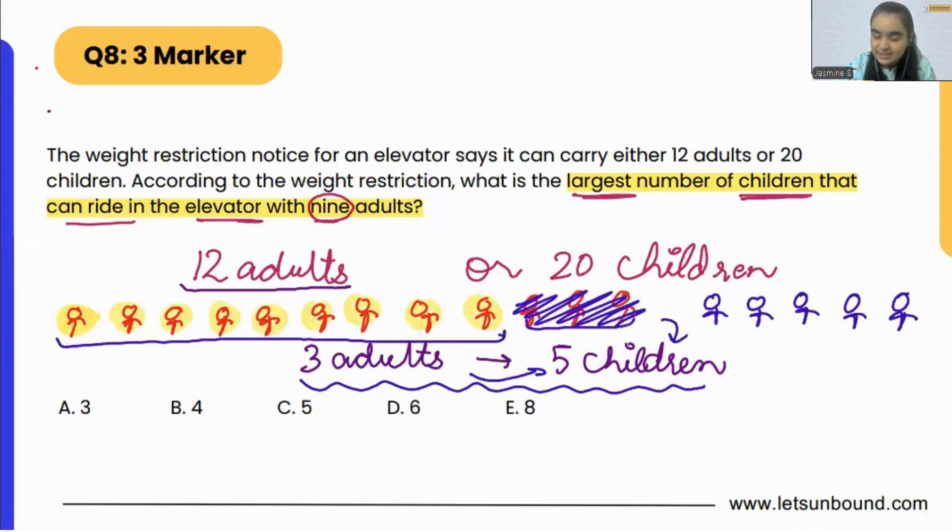So in the elevator we are having 9 adults. If we see, 12 adults, out of which 9 are already there which is provided in the question, and the remaining 3 can be replaced with 5 children. So our correct answer is 5.